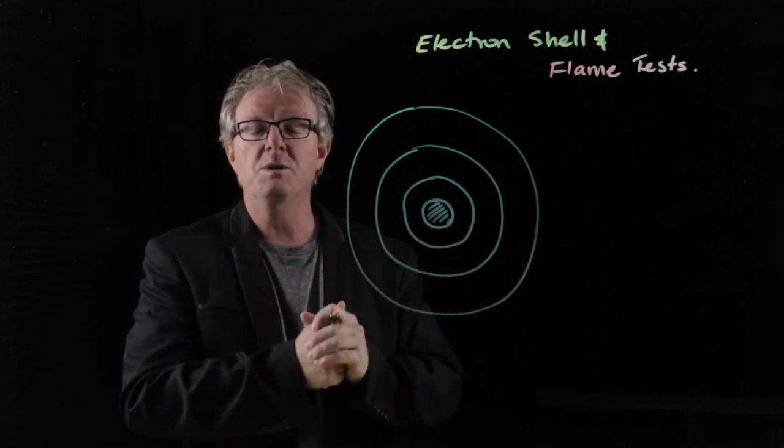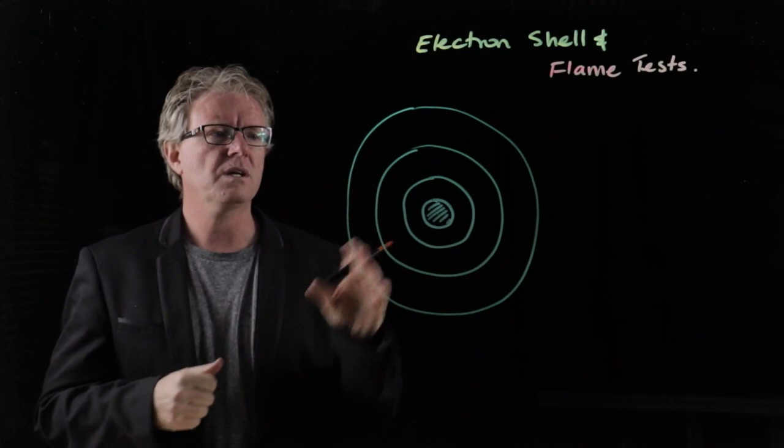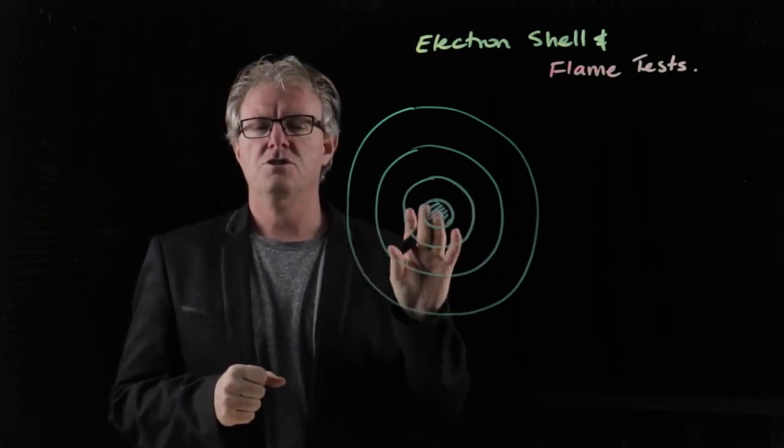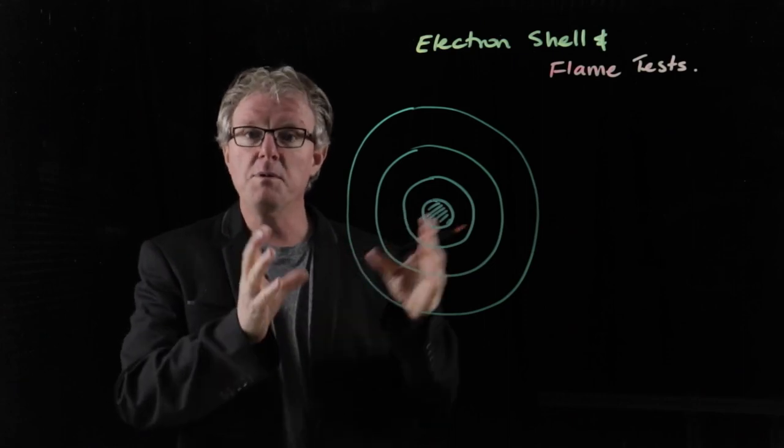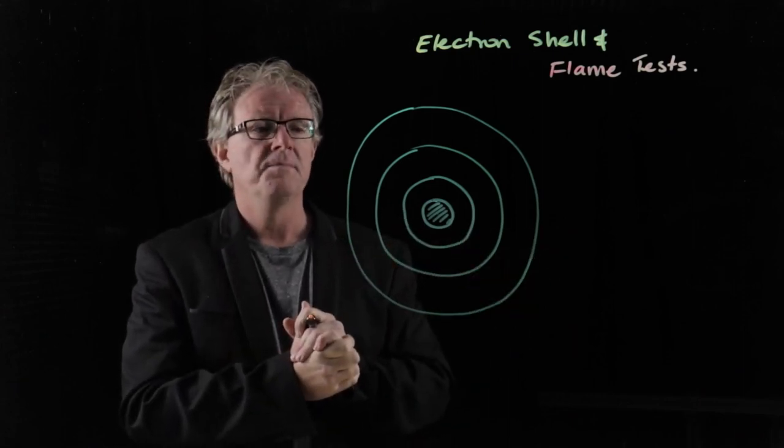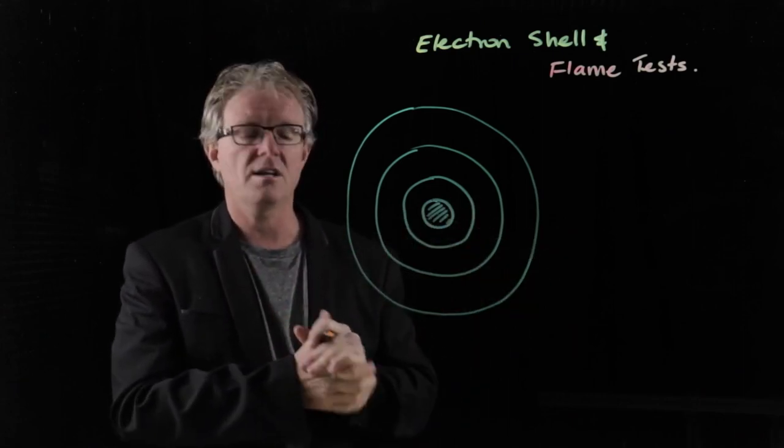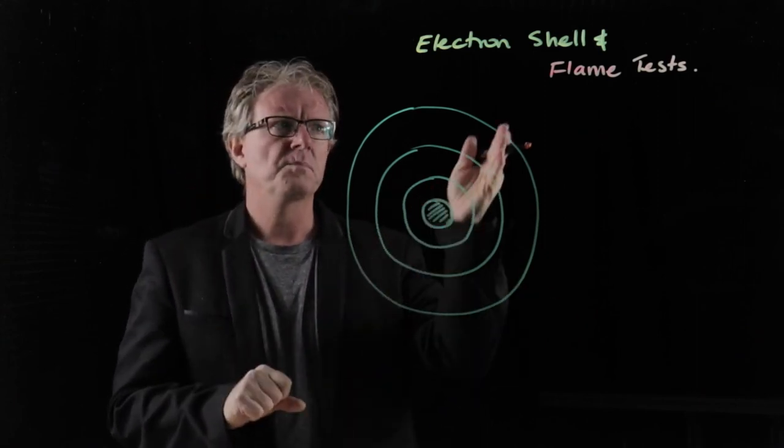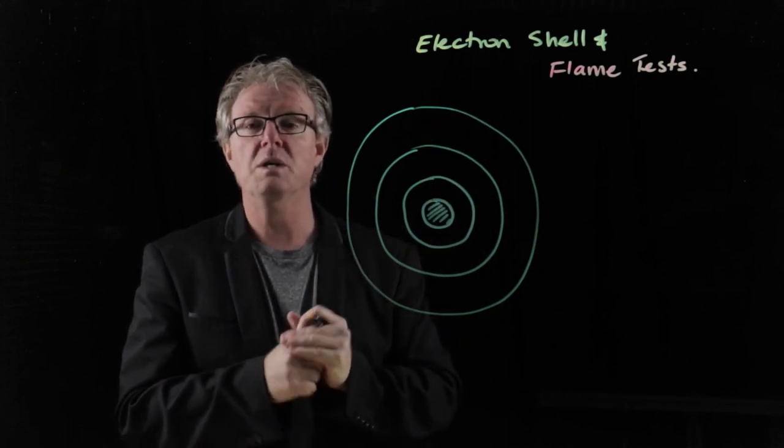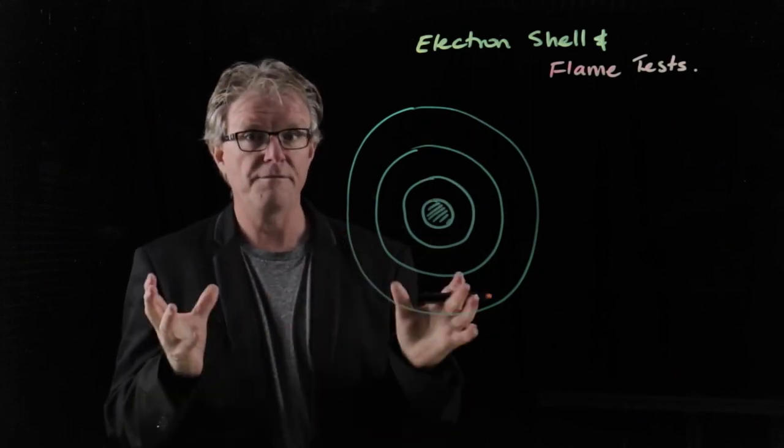Now, not only that, from this knowledge we can work out about other things. We can work out the structure of stars, the color and temperature of stars, the chemical composition of planets. We can use it in forensic science to work out what type of drug is present. So from this concept we're doing today, flame tests and electron shells, we can learn a lot of chemistry and physics.